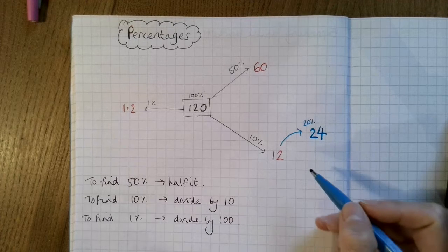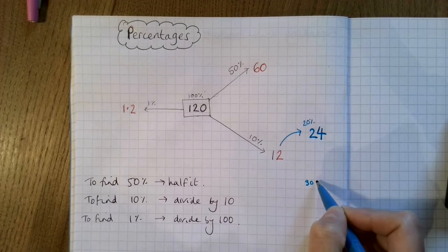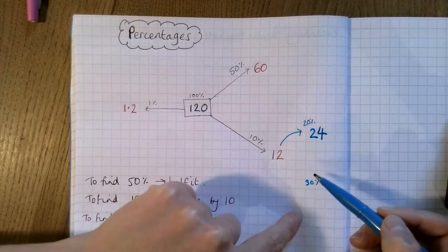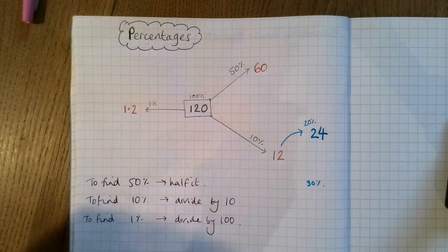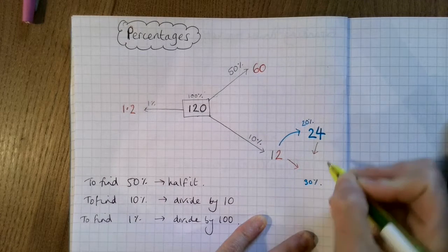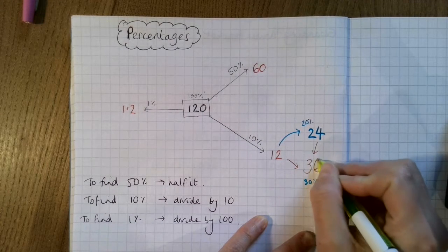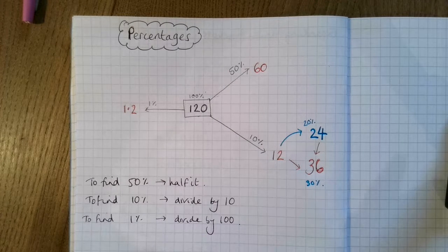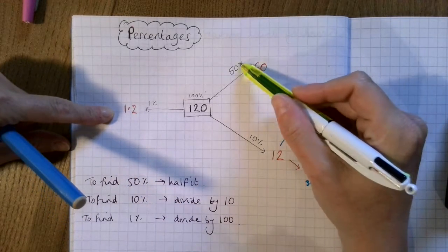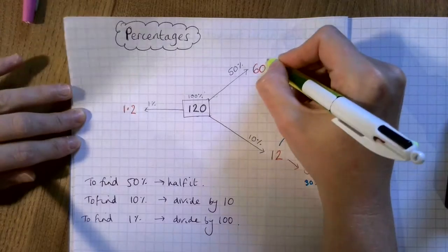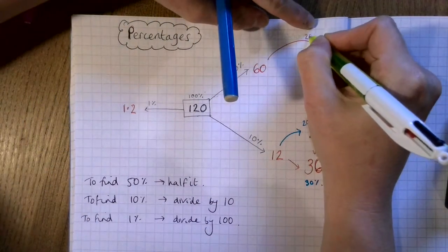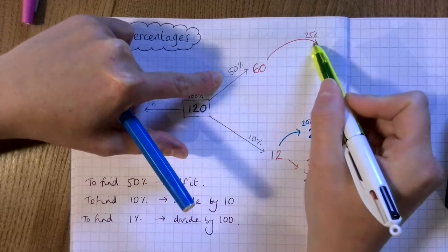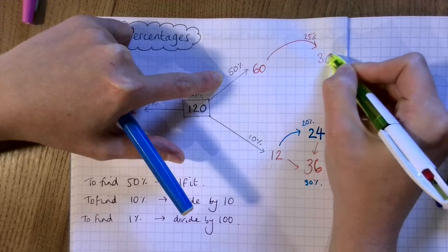And then if we wanted to find 30%, we could add the 10% to the 20% because 10% plus 20% is 30%. So 12 plus 24 is 36. And that would be 30%. Then if I wanted to find 25%, I'd half the 50%. So that would be 30.